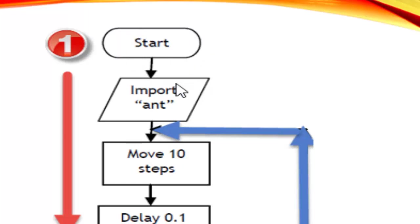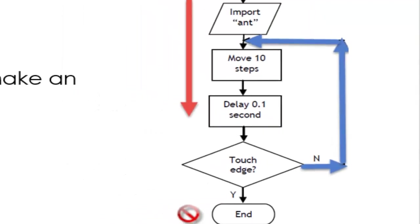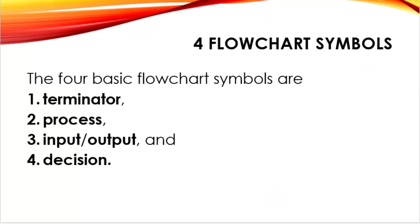Let's now go through the shapes. This is a rounded rectangle. This is a parallelogram. This is a rectangle. Rectangle. And a diamond. Now when do we use which shape? There are 4 flowchart symbols that you have to learn. These are the terminator, the process, the input or output, and the decision. These are the 4 basic flowchart symbols, which are also the category names.